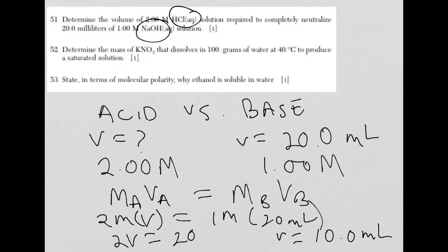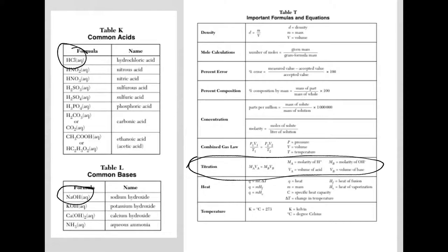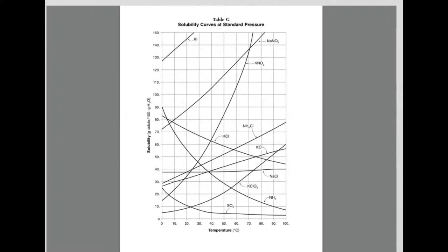Question 52. Determine the mass of potassium nitrate that dissolves in 100 grams of water at 40 degrees to produce a saturated solution. You have to recognize this. Now you first might go to table T and look for a calculation, but you're not going to find anything. Instead, what you're looking at, you need to find the solubility curves.